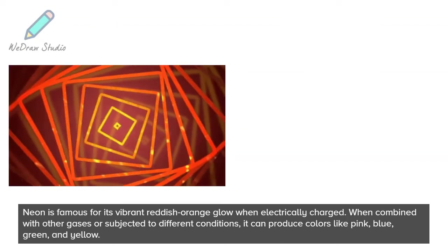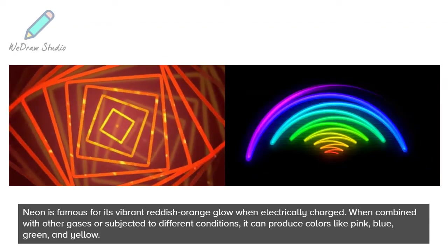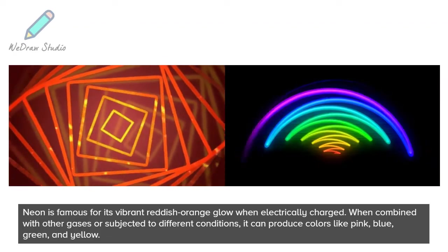Neon is famous for its vibrant reddish-orange glow when electrically charged. When combined with other gases or subjected to different conditions, it can produce colors like pink, blue, green, and yellow.